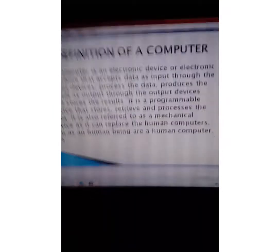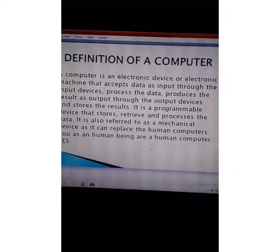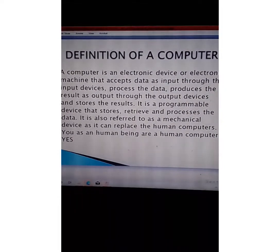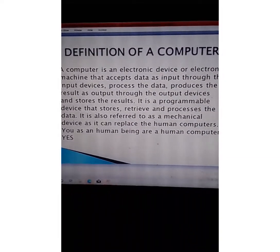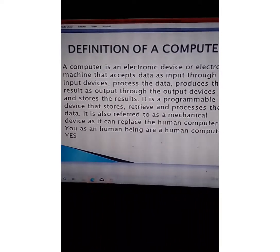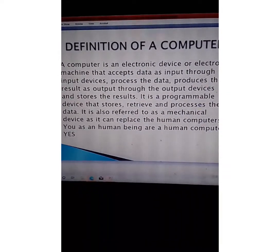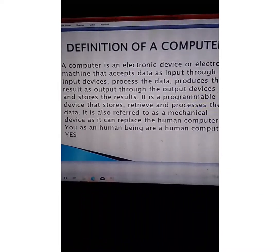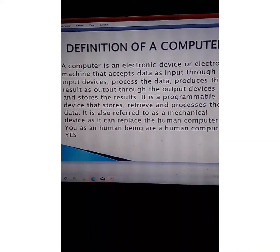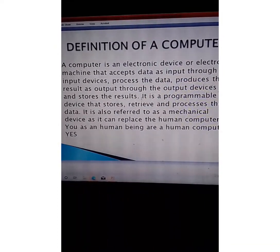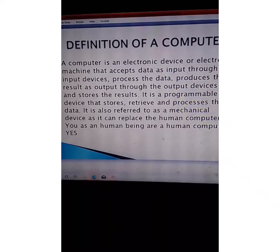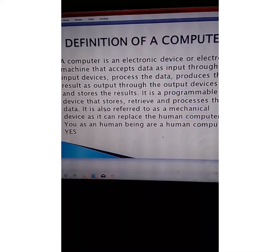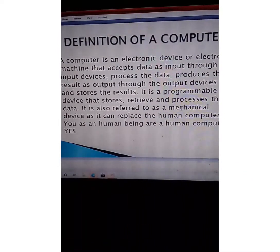So what exactly is a computer? It is an electronic device — electronic in the sense that it uses electricity to operate. I also call it an electronic machine that accepts data as input through the input devices, processes the data, produces the result as output through the output devices, and stores the result. It is a programmable device that stores, retrieves, and processes data, and is also referred to as a mechanical device.